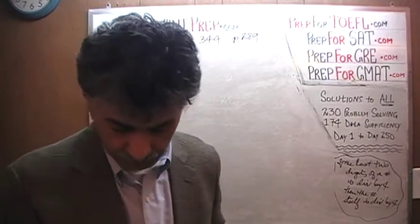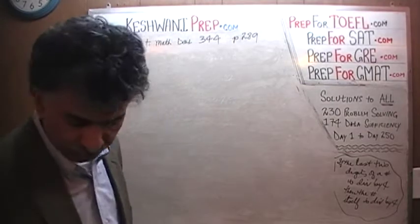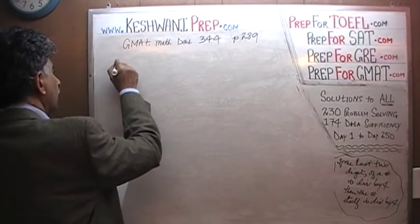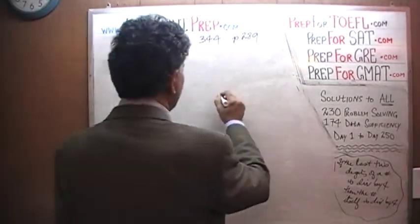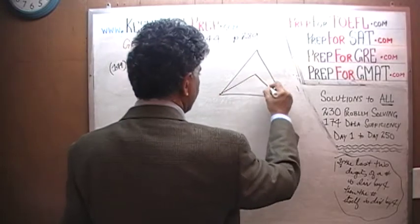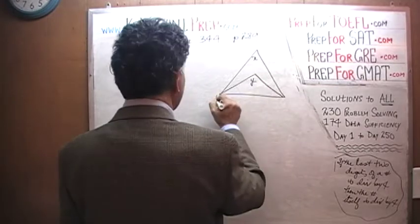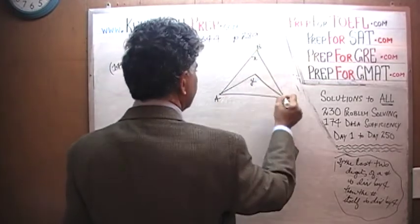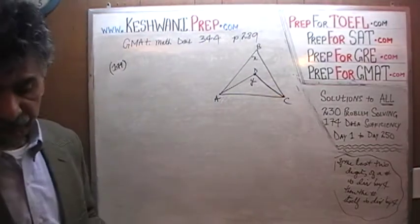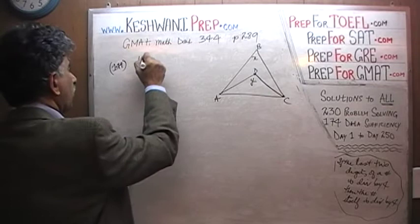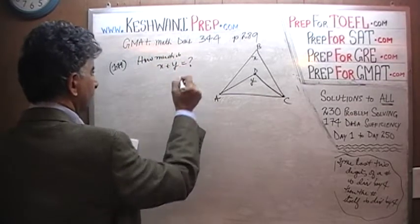Page number 289, the very first problem is number 149. Number 149 is a geometry question. Here is the picture given to us: there's a large triangle, and inside the large triangle is a small triangle. We are told that this angle is x, this is y, with points A, B, C, and D. The question is simply: how much is x plus y?